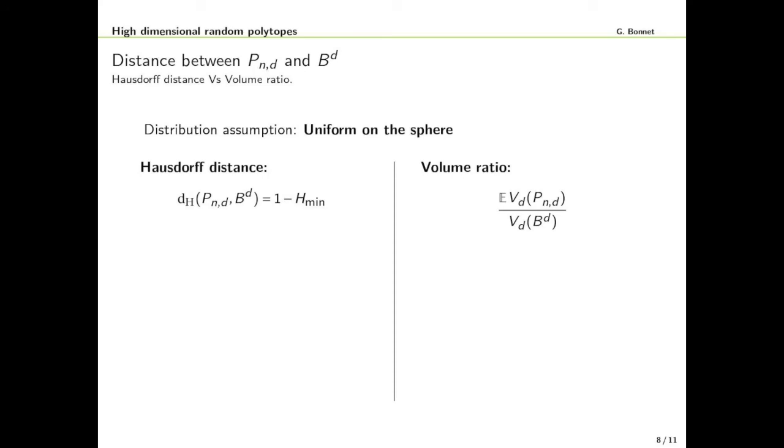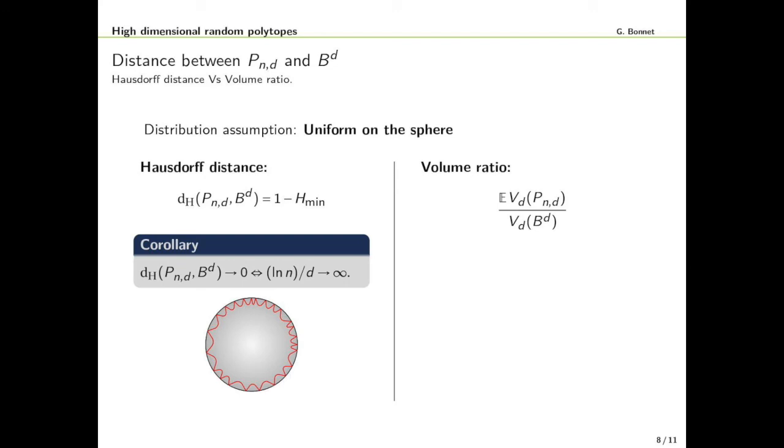Now we will investigate the distance between the random polytope P_n^d and the unit ball B_d. We stick in the setting where the distribution is the uniform distribution on the sphere. We have different ways of measuring the distance between the polytope and the ball. The first is to consider the Hausdorff distance, which in this setting is precisely one minus the minimal height. Another way is to look at the volume ratio, the expected volume of the random polytope divided by the volume of the ball. A direct corollary of the theorem on the minimal height says that the Hausdorff distance will go to zero if and only if ln(n) divided by d goes to infinity, if and only if we are in the super exponential regime.